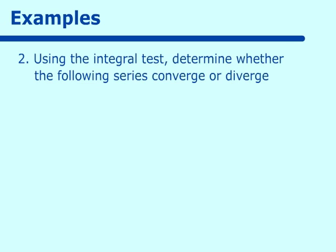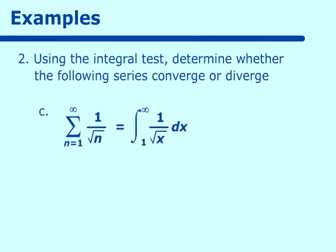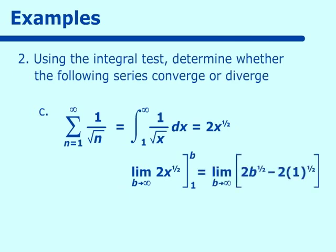Most of these examples fall under the title of p-series. We integrate 1 over the square root of x from 1 to infinity, which equals 2x to the one-half, evaluated as the limit as b approaches infinity from 1 to b. Substituting b at infinity, this becomes infinite. So this one is divergent.